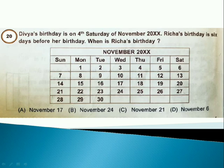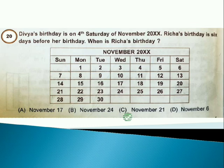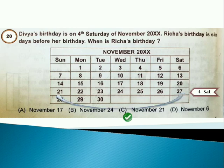Riya's birthday is on 4th Saturday of November. Richa's birthday is 6 days before her birthday. When is Richa's birthday? Answer is option C. You can see here, 27th November is 4th Saturday. That is Devya's birthday. 6 days before means 21st November which is Richa's birthday.